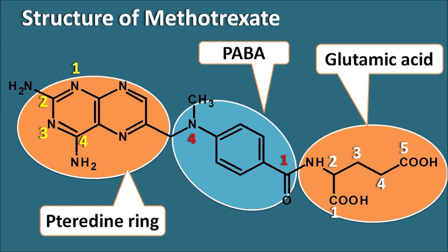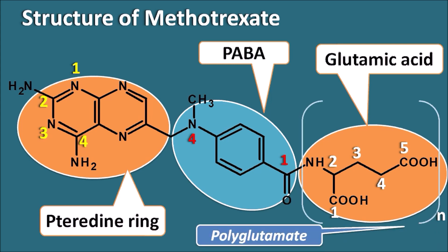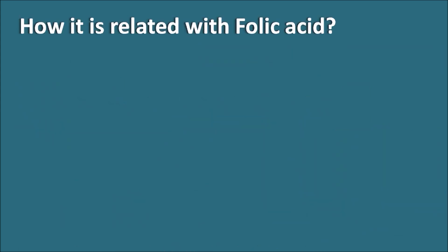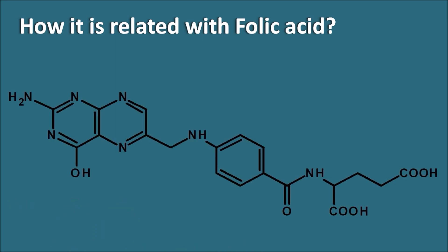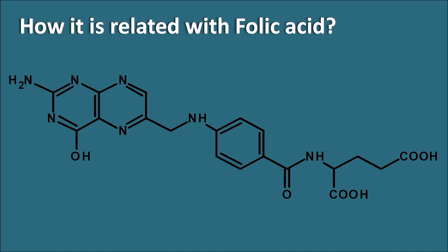Methotrexate shows its activity through conversion to its polyglutamate form — the glutamic acid moiety is polymerized to form polyglutamates, which are the active form and exert their action on folic acid utilization. The structure of methotrexate is somewhat similar to the structure of folic acid.